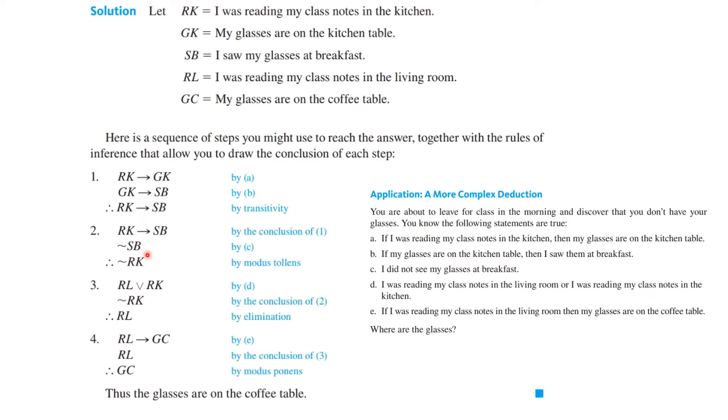Then by that conclusion, I know that RK implies SB. But C says I did not see my glasses at breakfast. So that is the negation of that. That should have been the little bar symbol. And so you see by modus tollens, I have the first implies the second, not the second, therefore not the first.